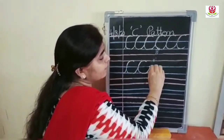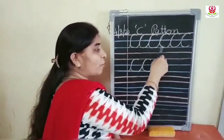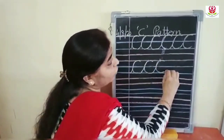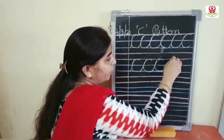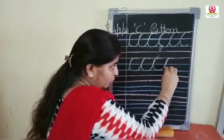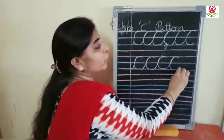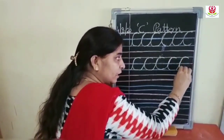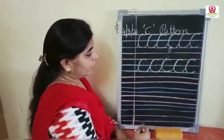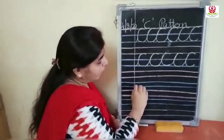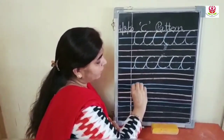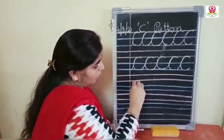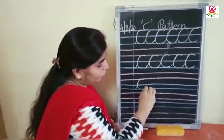Now again write C — go up to the red line, form a curve, and write C. Again go up to the red line, make a C, come back to the blue line. Again go up to the red line, come back and form a C. Again write C — start, go up to the red line, make a curve, come back to the blue line, form a C.